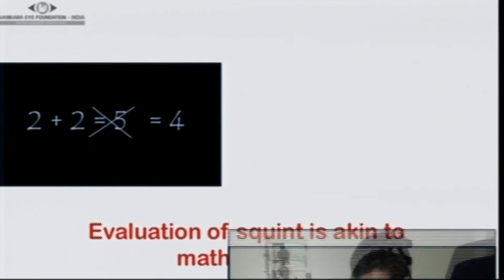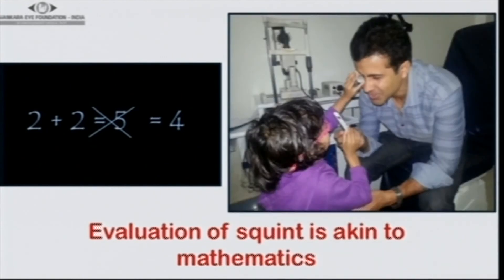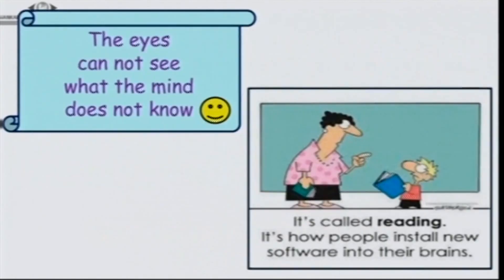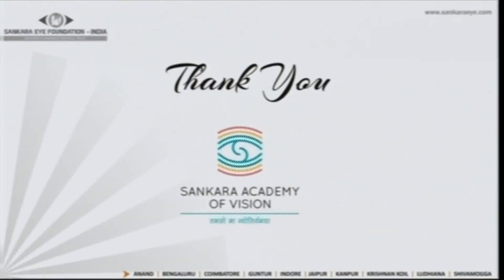Evaluation of squint is akin to mathematics where 2 plus 2 is always 4 and can never be 5. One of my patients has become so used to the examination that she wanted to check her father using the fixation target and prism herself. Beyond all this, it's not the equipment that makes the difference but how we interpret findings — as the saying goes, the eyes cannot see what the mind does not know. Thank you very much.